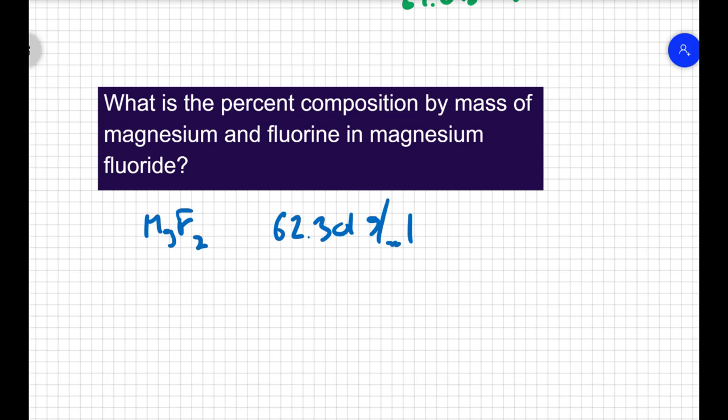If I want to find the percent composition of magnesium, I can just take the mass of the magnesium in this compound. In this compound I have one magnesium, so it's just going to be 24.305, and divide that by 62.301, the total, turn that into a percentage, and for magnesium I get 39% magnesium.